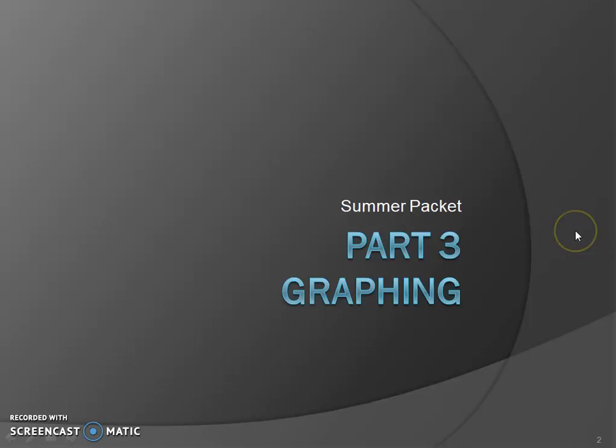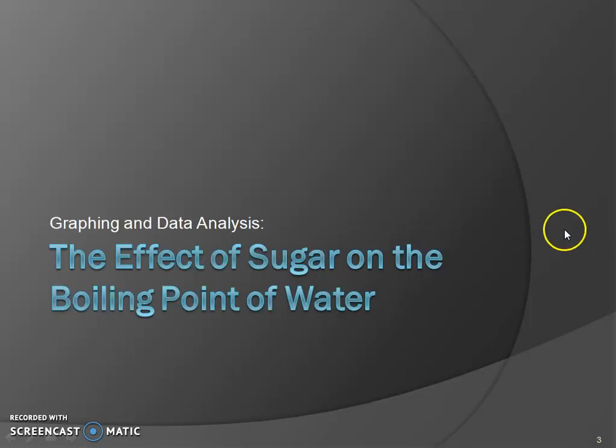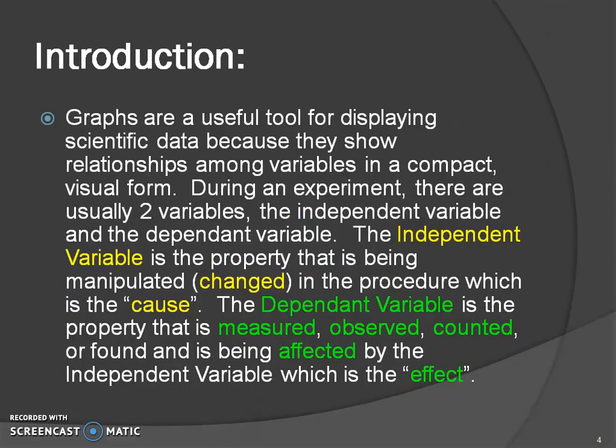This is part three of your summer packet on graphing. We're going to look at data that has been collected and graph the effect of sugar on the boiling point of water, and then analyze that graph.